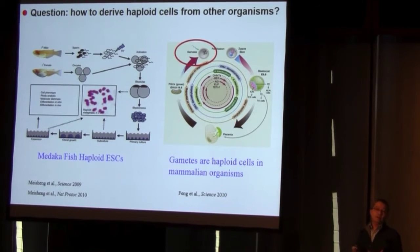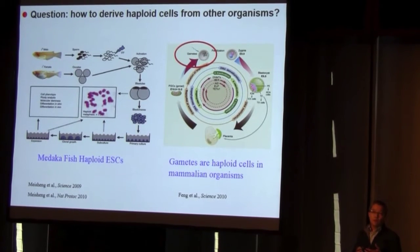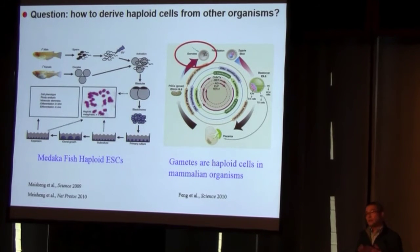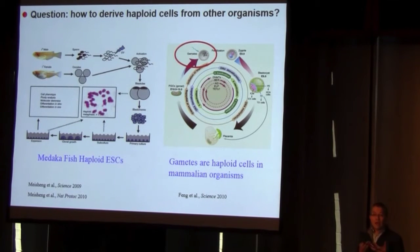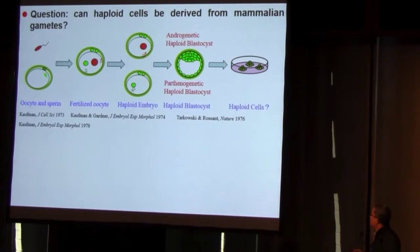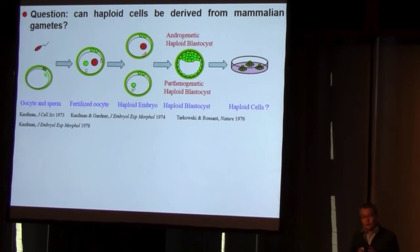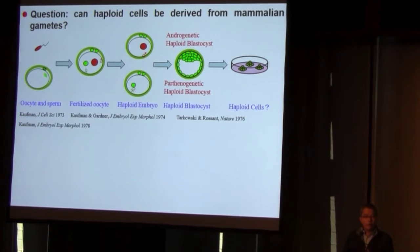However, from this picture we can see the only haploid cells in mammals are gametes, including oocytes and sperm. But both oocytes and sperm are structurally specialized cells — these cells cannot divide in culture. So the next question is: how can we derive a cell line from these non-dividing cells? Actually, there is one strategy: produce haploid embryo stem cells from haploid embryos.